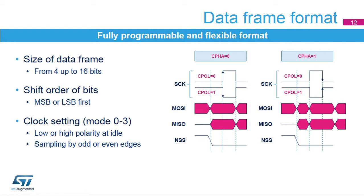Several parameters are used to set up the data format. Users can define the data frame size and the transmit order of the shift register. The clock can be set to one of four basic configurations defined in the Motorola SPI specifications. The combination of two bits controls the polarity and phase of the clock signal. When the phase control bit is cleared, data bits are sampled on the odd clock edges and the even clock edges synchronize the shifting of the next bit onto the data line. This is the opposite when the phase control bit is set. The clock polarity bit defines the idle state of the clock signal and which clock edge is used for data sampling or shifting.